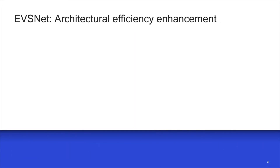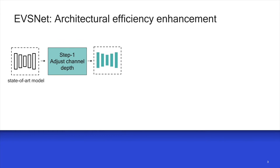Here is an overview of our approach. Given a state-of-the-art semantic segmentation network, Step 1 applies hardware-aware channel adjustment that prunes away a fraction of the total channels to best fit the hardware preference.